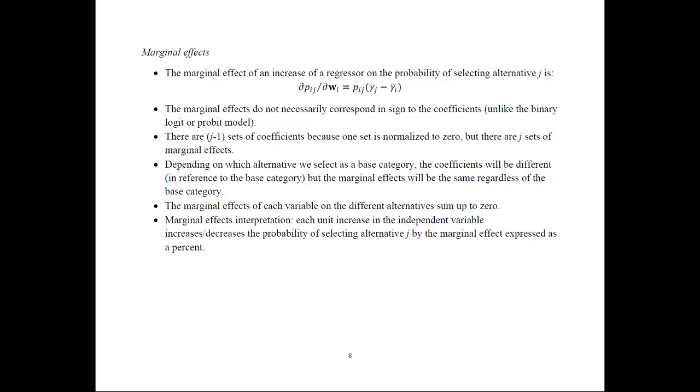There may be J minus 1 sets of coefficients, but there are J sets of marginal effects. Importantly, the marginal effects are invariant to the choice of base category, unlike the coefficients. The marginal effects for each variable sum to zero — because if a person is more likely to select some alternatives, they must be less likely to select others. The interpretation is that each unit increase in the independent variable increases or decreases the probability of selecting alternative j by the marginal effect expressed as a percent.